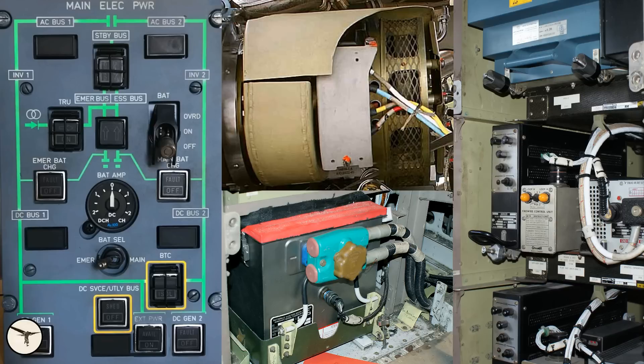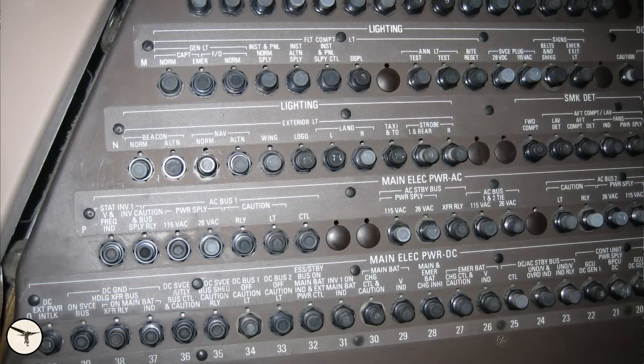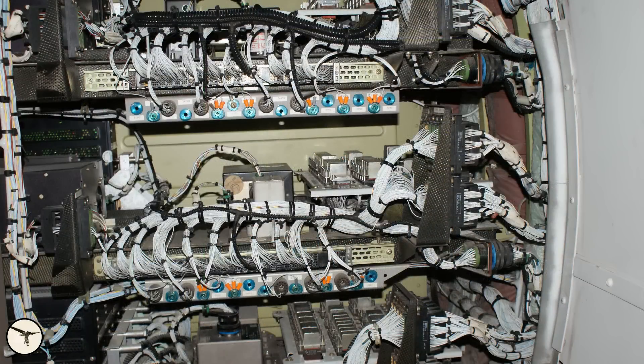The most complex situations happen when we have electrical failures. The electrical system consists of several power sources, like generators, inverters, transformers and batteries, and many bus bars.